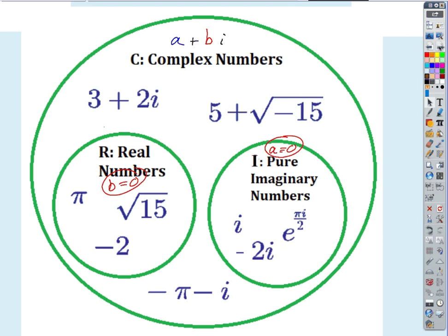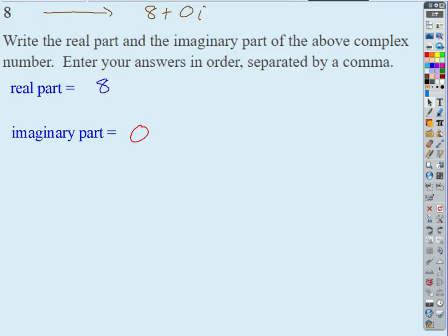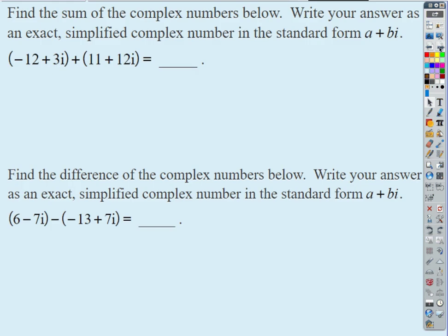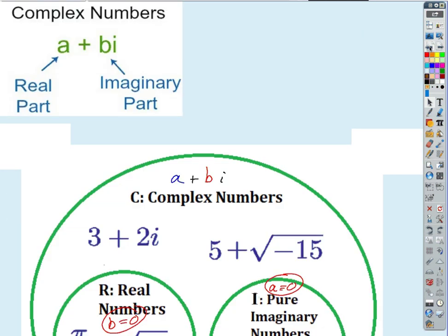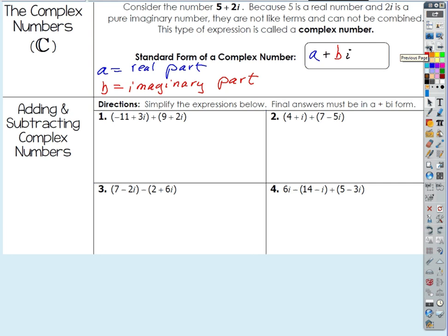For today, what we're doing is really simple: we're going to practice adding, subtracting, and multiplying complex numbers, which is a very easy thing to do. Here's the key hint: when adding, subtracting, and multiplying, just treat i like a variable — like x, for example.